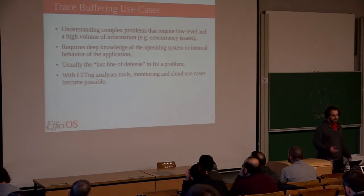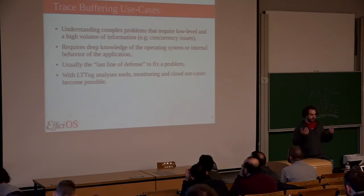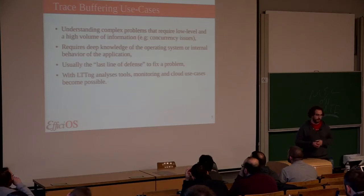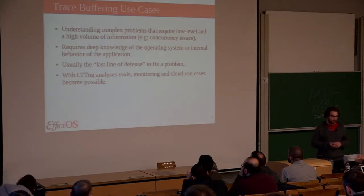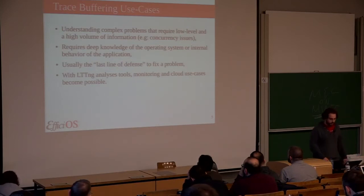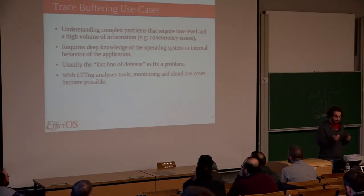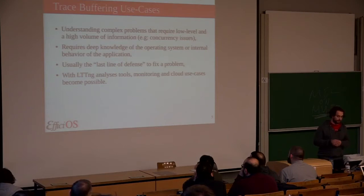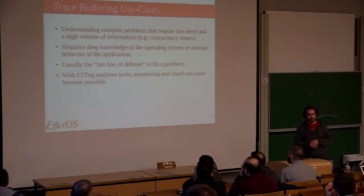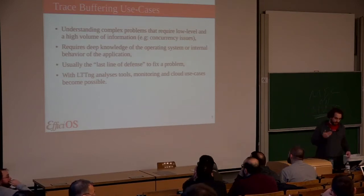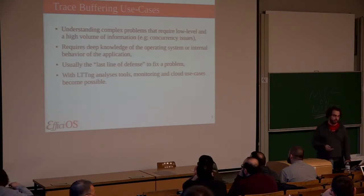The buffering use case is to understand complex problems. You need as much information as possible because you want the low-level data and to be able to process the trace offline and see what was happening. It can be used to solve concurrency issues, race conditions, driver issues, and low-level problems. You also have hardware tracing which does this kind of trace buffering. It's usually considered the last line of defense — when you are using a tracer, it's because you didn't find the solution with other tools first. But what I'm going to show today, you will see it can be used in production for continuous monitoring use cases.